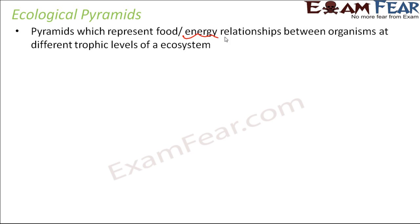It will tell us about the energy relationship — how energy decreases as we go to higher trophic levels — and also the food relationships between organisms, that is, which organism acts as food for which other organism. These pyramids give a simpler structure rather than drawing a complex food chain.